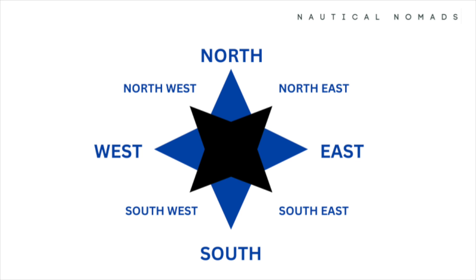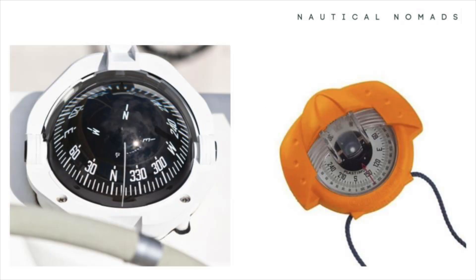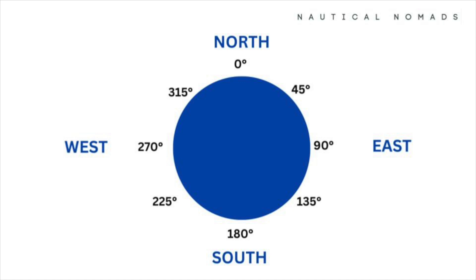These cardinal points are based on the Earth's rotation and are constant, providing a fixed framework for navigation. When looking at a compass, you'll see it's divided into 360 degrees, forming a full circle. Each cardinal point — north, east, south, and west — corresponds to a specific degree on this circle. North sits at the top, assigned zero degrees, and is both the starting and ending point of the circle.